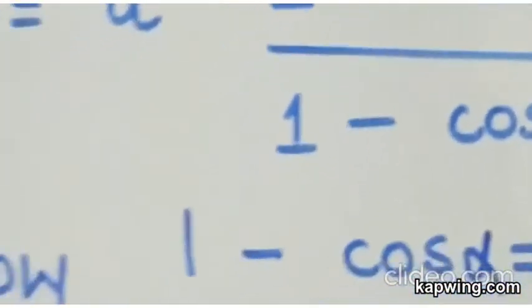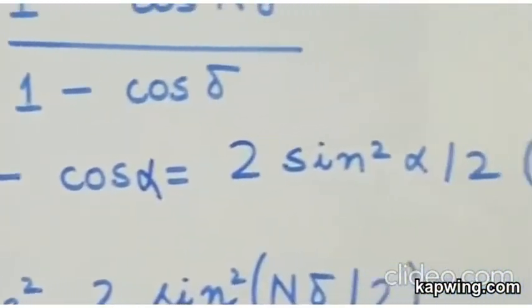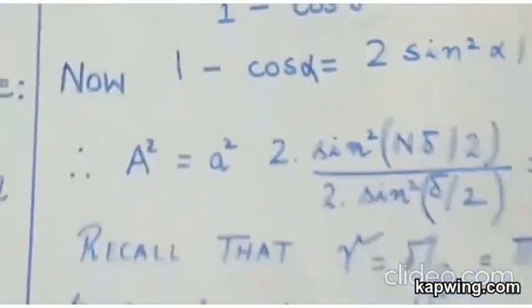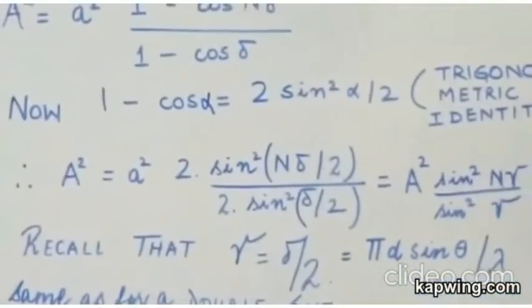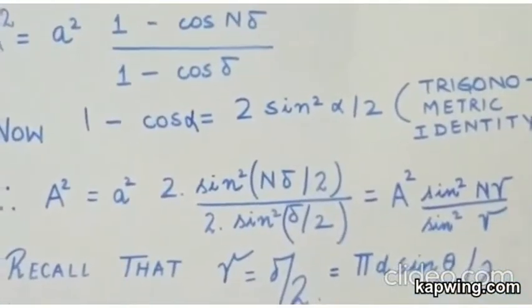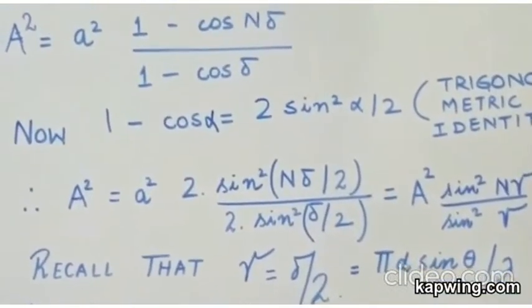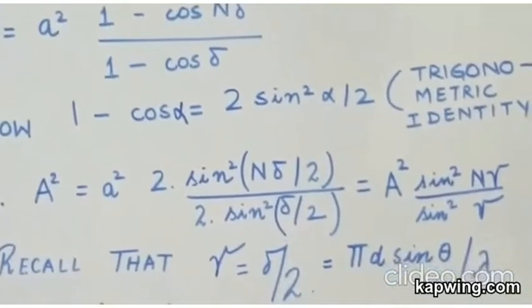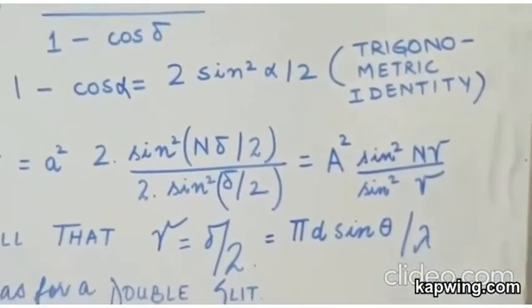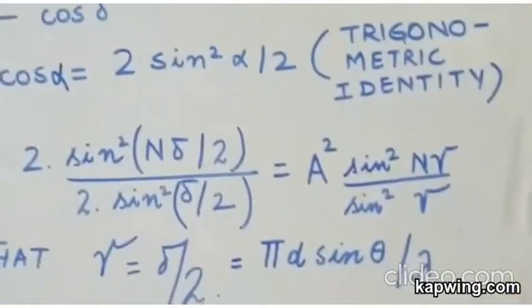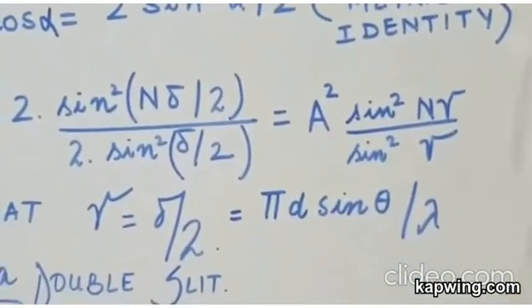There should be a cos alpha here. So 1 minus cos alpha is equal to 2 sin square alpha by 2. This is a trigonometric identity. So if I write down the resultant expression now you will have capital A square equal to small a square into 2 sin square n delta by 2 divided by 2 sin square delta by 2 and this becomes equal to capital A square sin square n gamma upon sin square gamma.